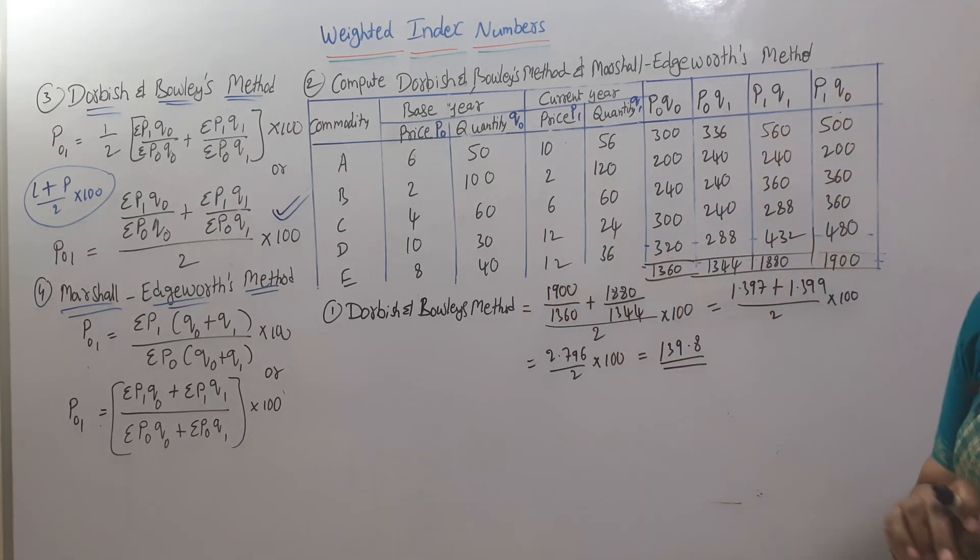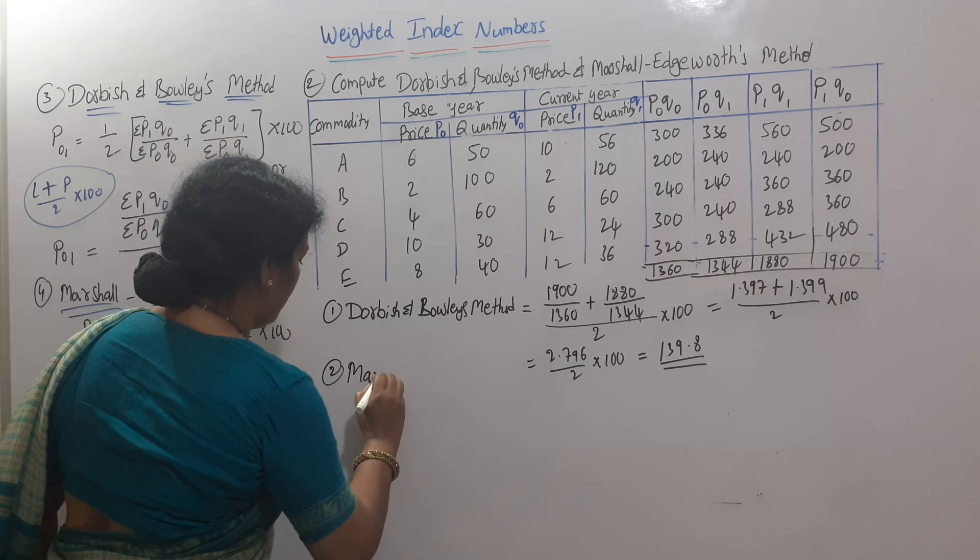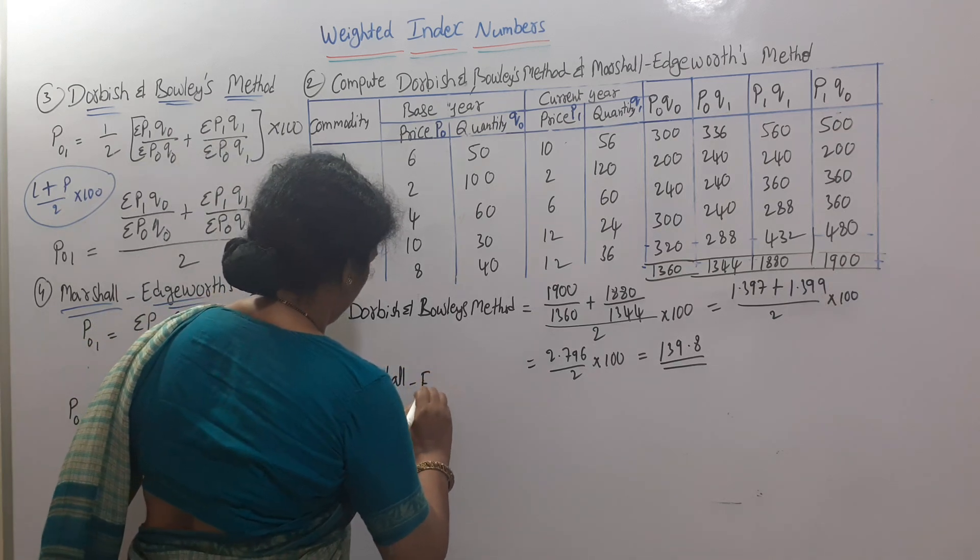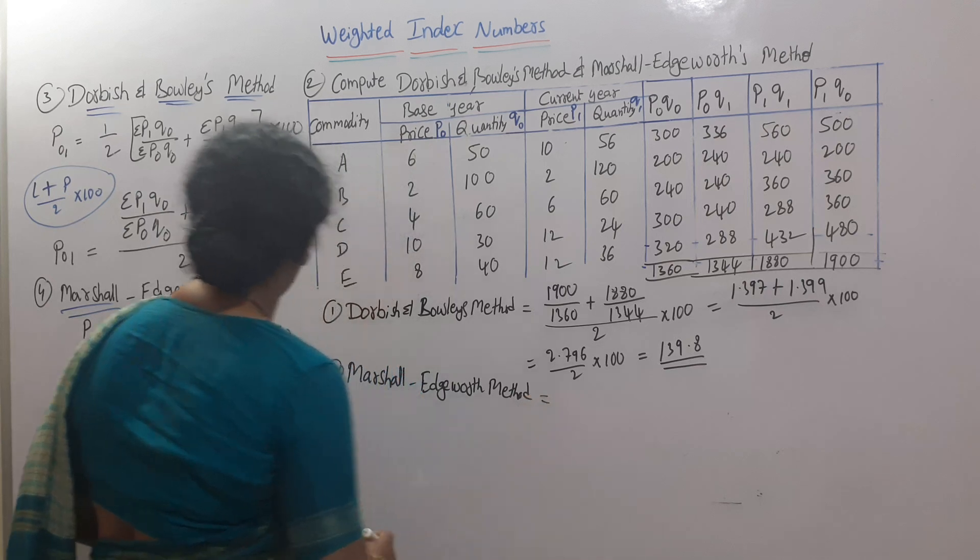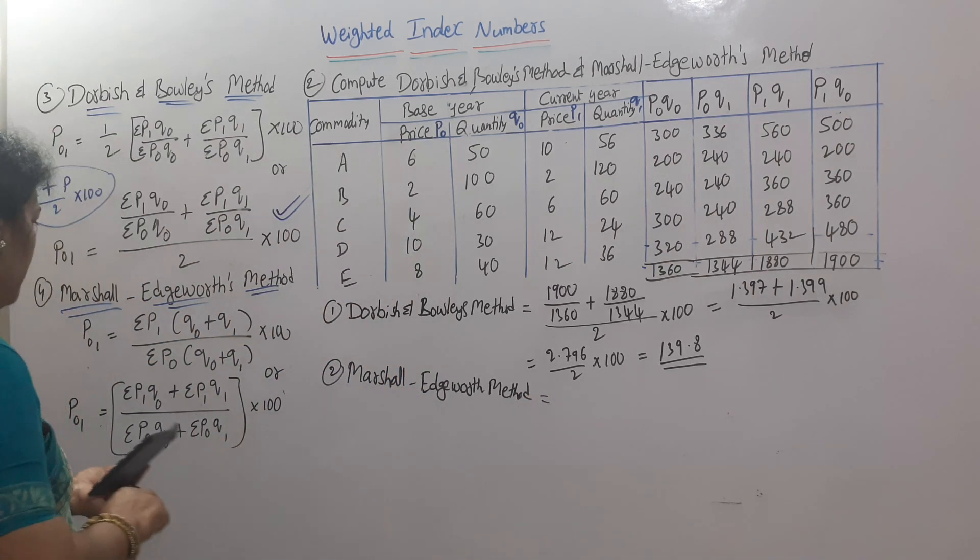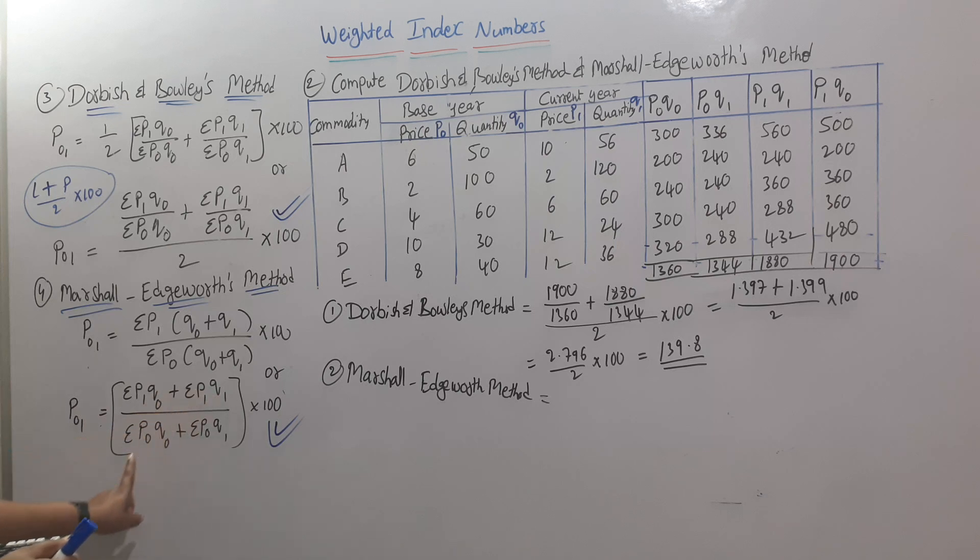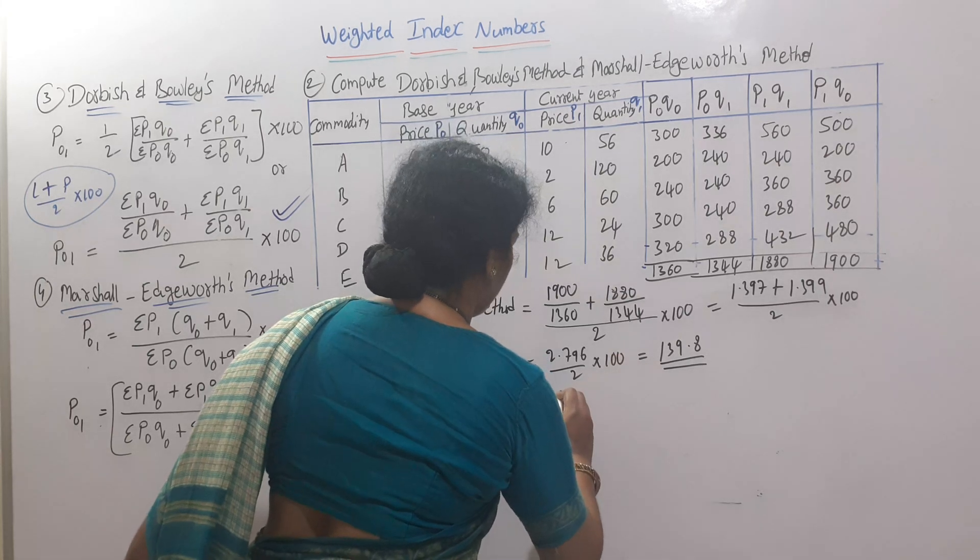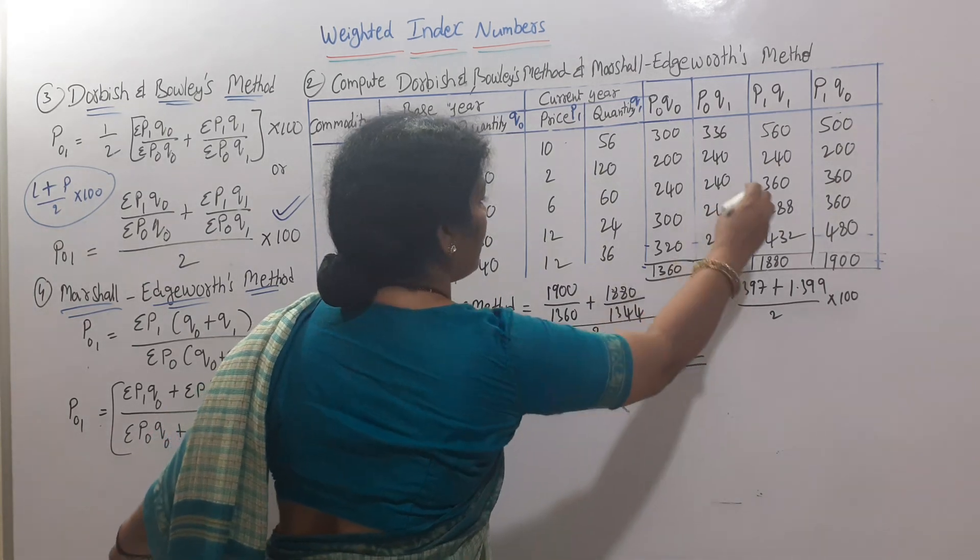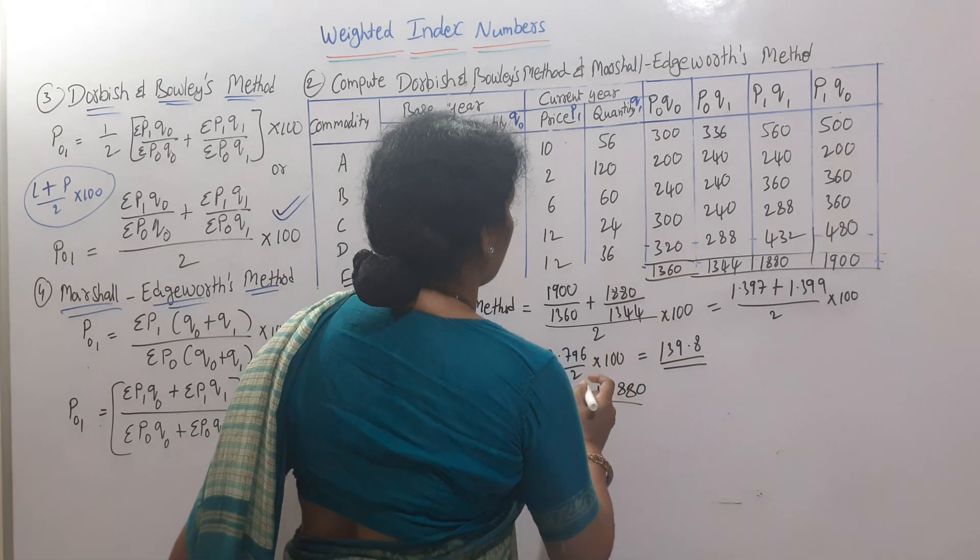Now Marshall-Edgeworth method. Following this formula, I prefer the second one as it's easier - Laspeyres and Paasche top divided by Laspeyres and Paasche bottom. As per the formula: P1Q0 is 1900 plus P1Q1 is 1880, divided by P0Q0 which is 1360 plus P0Q1 which is 1344, times 100.